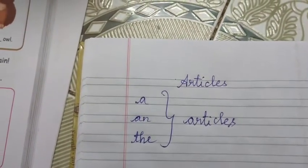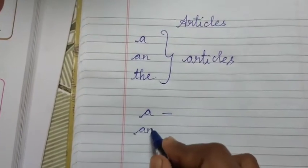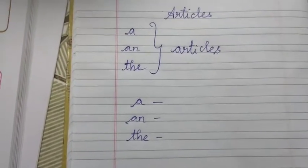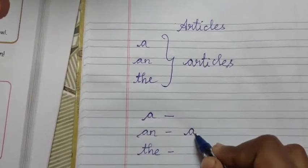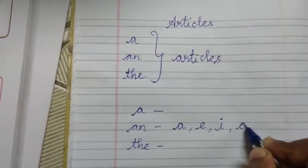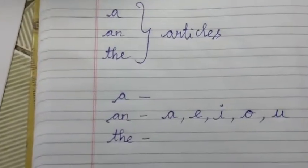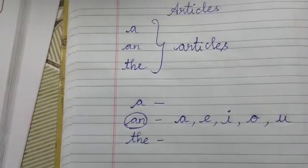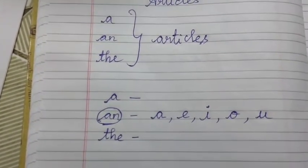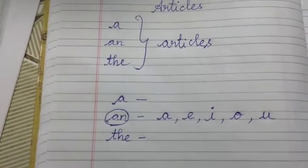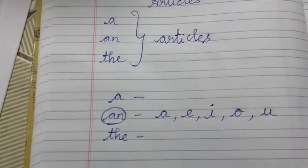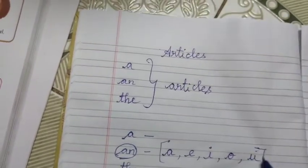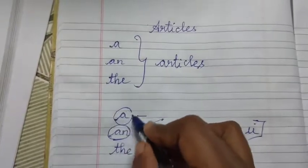First, 'a'. Next, 'an'. And next, 'the'. So if we have a vowel sound — what are the vowels? A, E, I, O, U. If we have a vowel sound, we can use 'an'. If we have vowels, we can use 'an'. And where we can use 'a' — we use 'a' when the words begin with any other sound, except the vowels. The article 'a'.